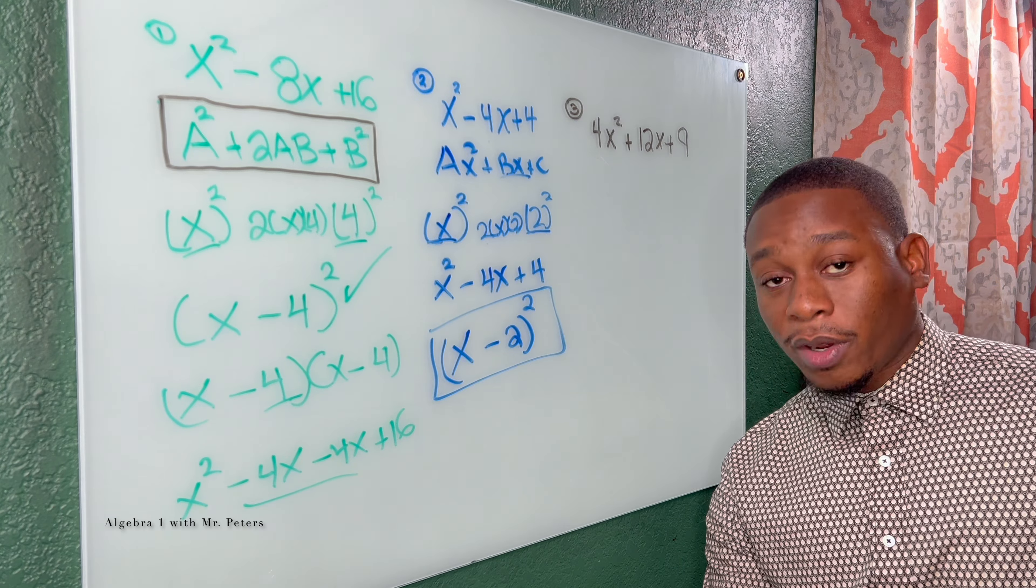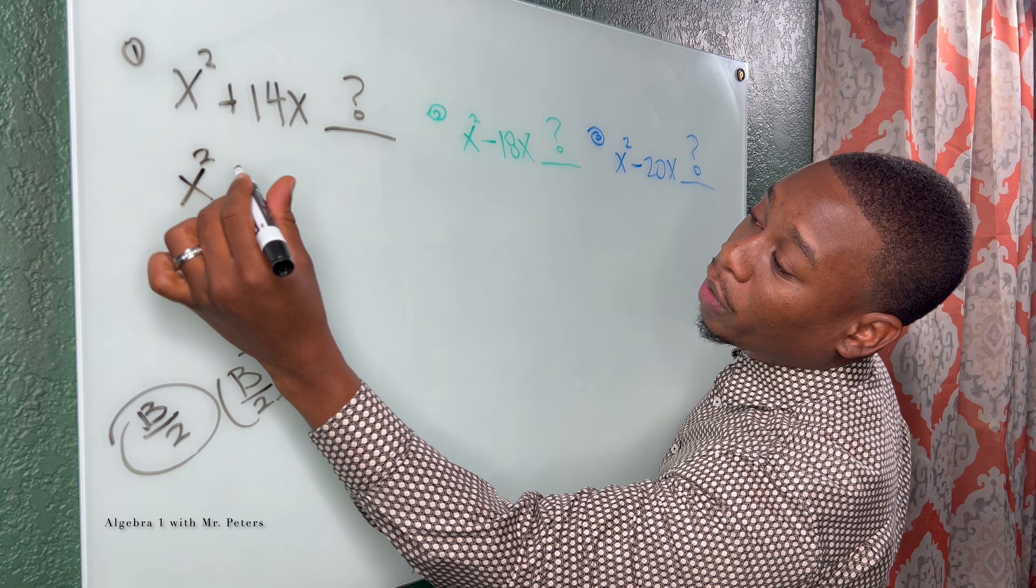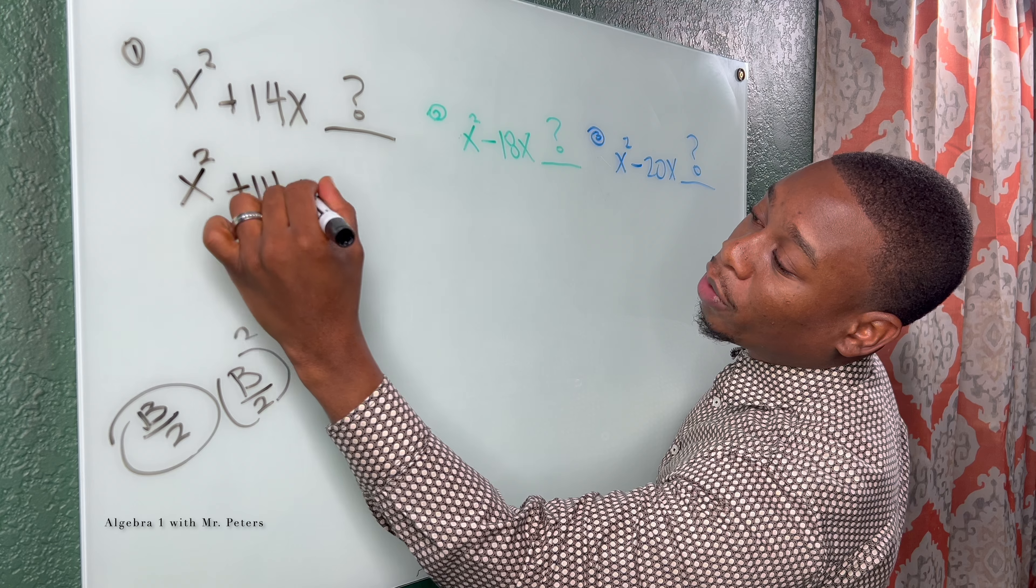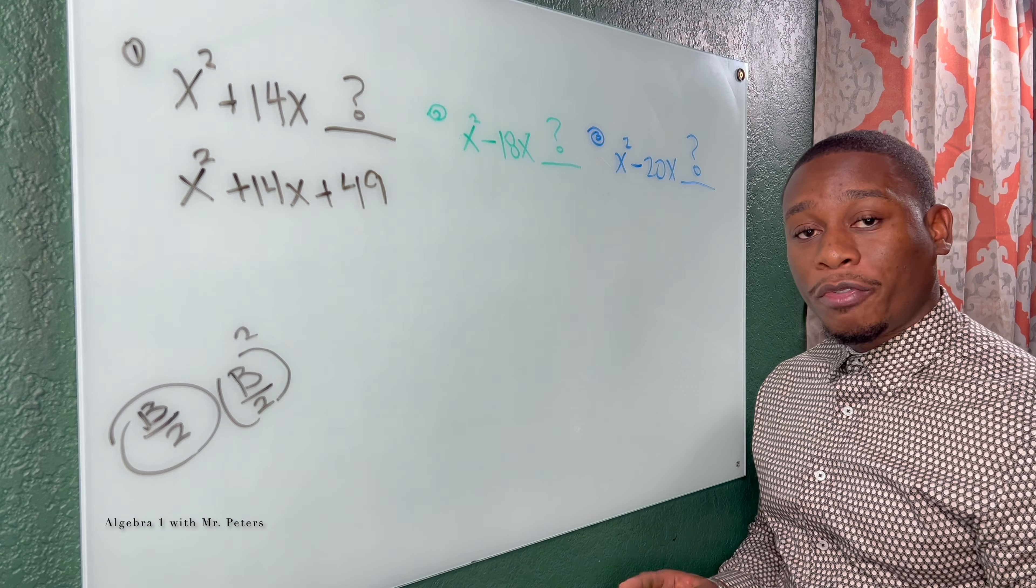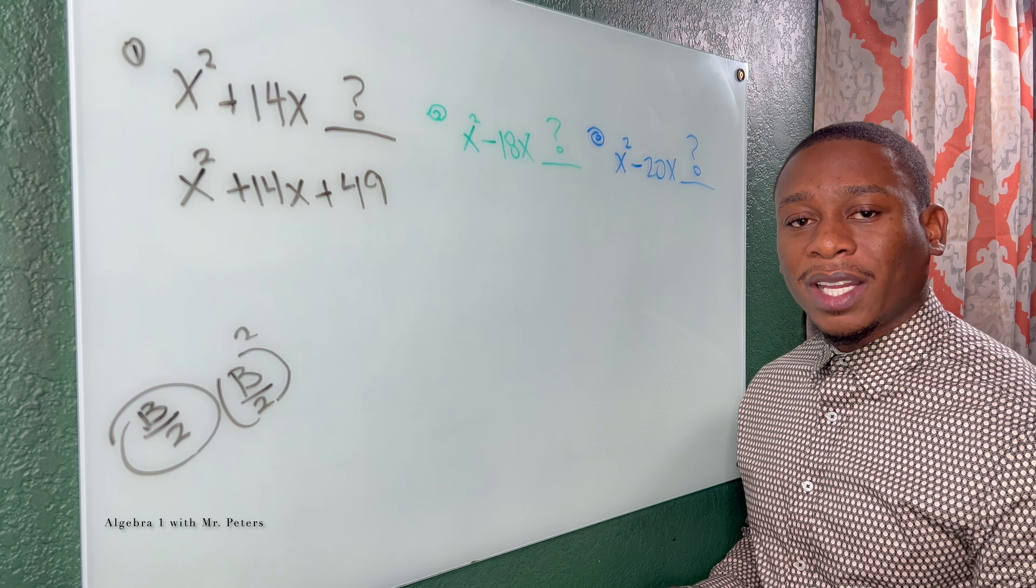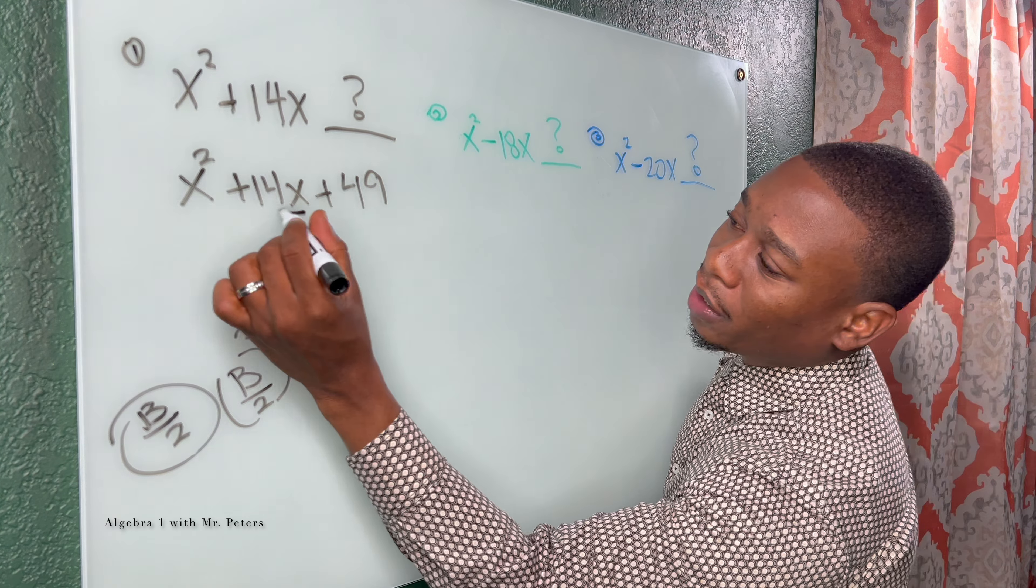So half of 14 is 7, 7 squared is 49. So this perfect square trinomial is x squared plus 14x plus 49. Now if I want to factor it and figure out what exactly is the binomial that gets me that, I'll just take b divided by 2. So I know that's 7. So x plus 7 squared is what will give me this perfect square trinomial.